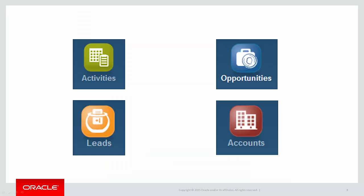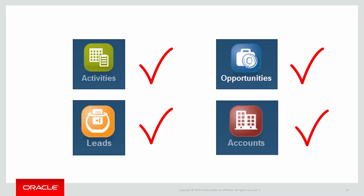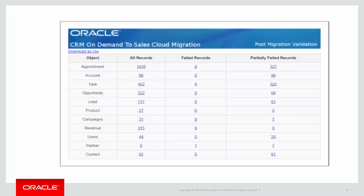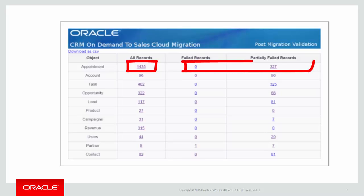The final step is the post-migration check. Here, the utility will compare everything that has been extracted and everything that has been created — or not — in Oracle Sales Cloud, and provide you a list of records that have not been created. Basically, you can compare what has come out of CRM-on-Demand with what was put into Oracle Sales Cloud and make sure that they're all there. Any records that were not migrated are identified for you to be able to take any necessary manual steps.